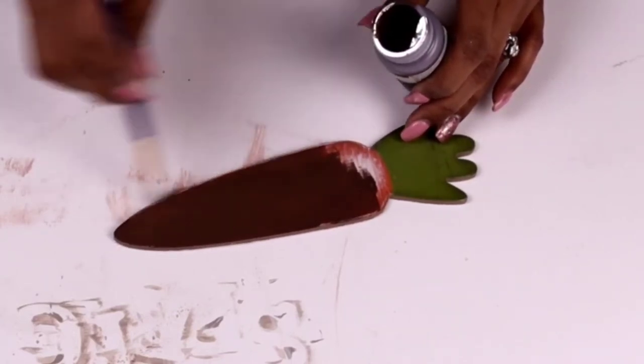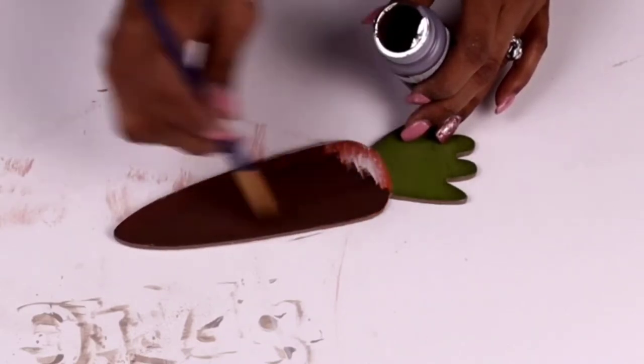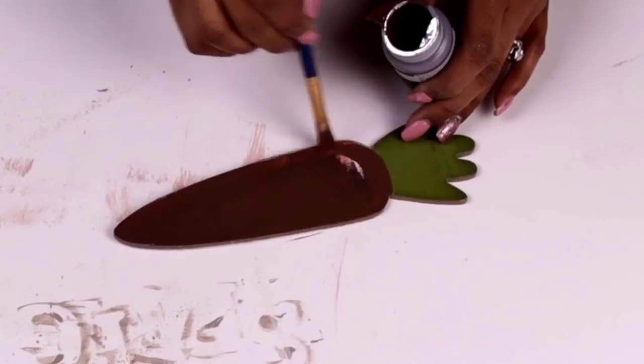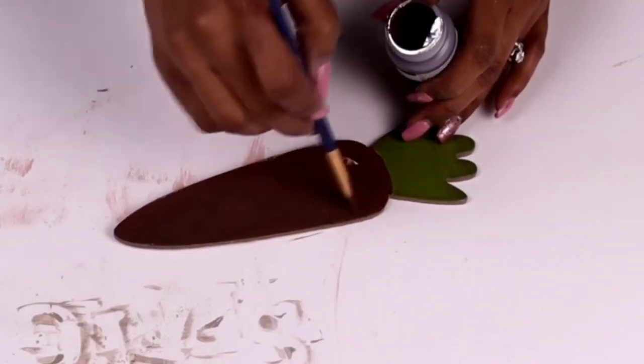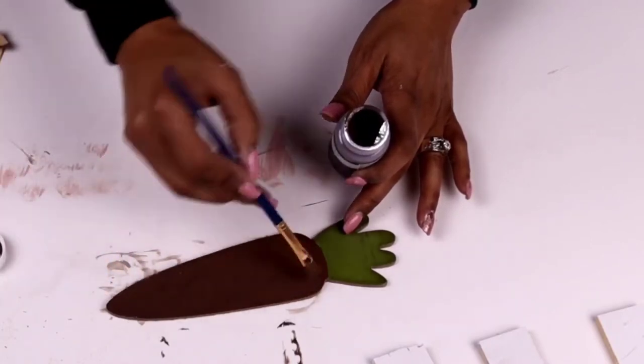I did end up using two coats because when I did the first coat you could still see the 'Happy' and the 'Easter' coming through on both of the carrots. But after that second coat it was pretty much fully covered. I think a third coat would have done it, but after two coats I was still very happy with the way that this turned out.